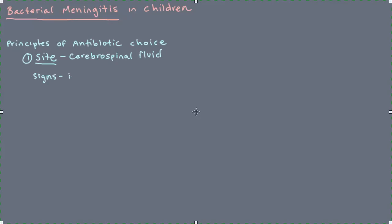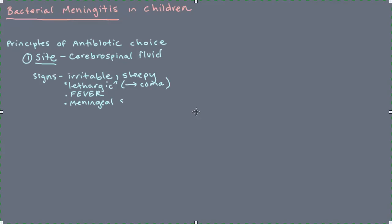The signs here include irritable children, and also very sleepy — some people might use the word lethargic — as an altered state of consciousness. At the extreme, the child would be in a coma, but that would be more advanced in the infection. The child would almost invariably have a fever associated with this illness. On examination, the physician may detect what are called meningeal signs, which include a stiff neck, especially if the child is over one or two years of age. The physician will often hold the child behind the head and try to flex the neck. A stiff neck means the child's neck would not bend when the head is elevated from the bed.